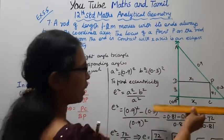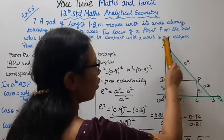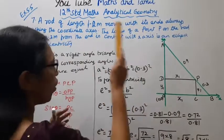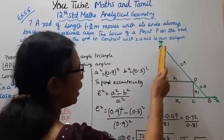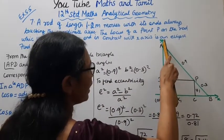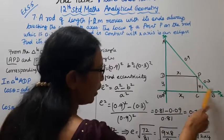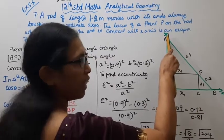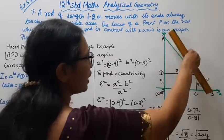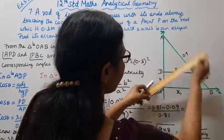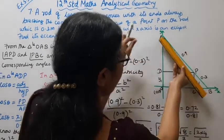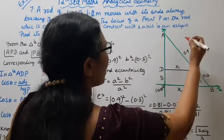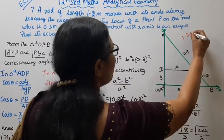This is the x-axis, this is the y-axis. One rod with its ends always touching the coordinate axes. One end touches the y-axis, one end touches the x-axis. This rod AB, the rod's length is 1.2 meters.